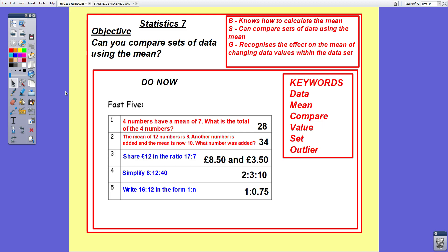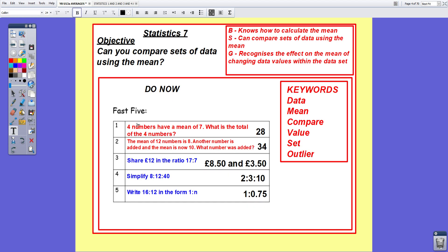Question two, the mean of 12 numbers is eight. This is quite a good question. The mean of 12 numbers is 8, so their total is 96. 12 times 8 is 96. Another number is added and the new mean is 10, so their total is 130. What number was added? 130 take away 96, which equals 34.